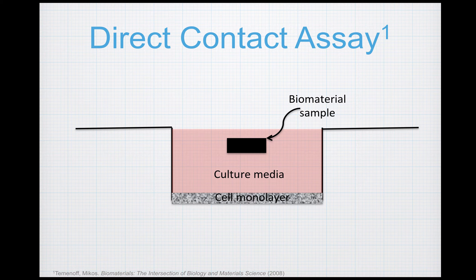In the direct contact assay, a small piece of test material is placed over top of a monolayer of cells in a culture plate. After 24 hours in the incubator, the cells in the area underneath and around the sample are examined under the microscope. Cells that are no longer living are usually floating. The assay is mainly qualitative, meaning you include a positive, or non-cytotoxic, and a negative, or completely cytotoxic, control, so that the degree of cytotoxicity can be ascertained by comparing cell morphologies.